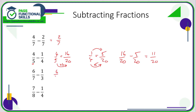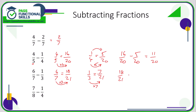For the next subtraction, with sevenths and thirds, we need to convert both into fractions out of twenty-one — the lowest number divisible by both seven and three. Seven to twenty-one: multiply the top by three, giving eighteen twenty-firsts. One third to twenty-one: multiply the top by seven, giving seven twenty-firsts. So the question is eighteen over twenty-one take away seven over twenty-one, and the answer is eleven over twenty-one.